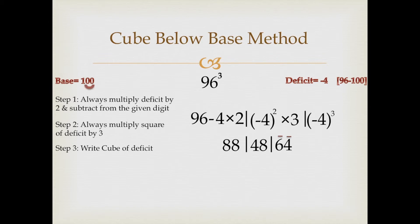Now because there are two zeros in the base 100, write down two digits as it is, 6 bar 4 bar. Write down 48 as it is and 88 as it is.